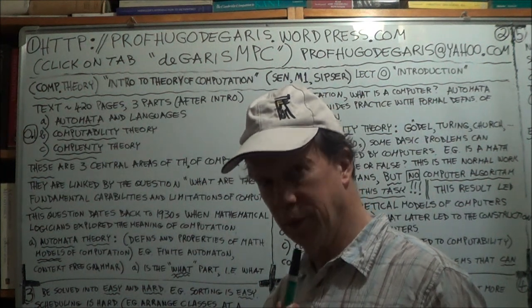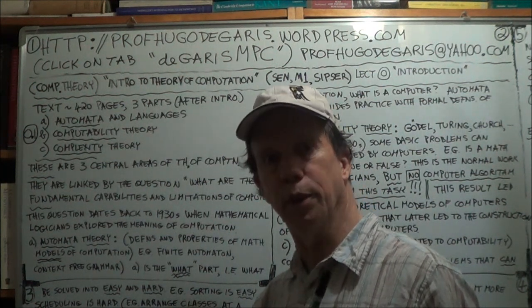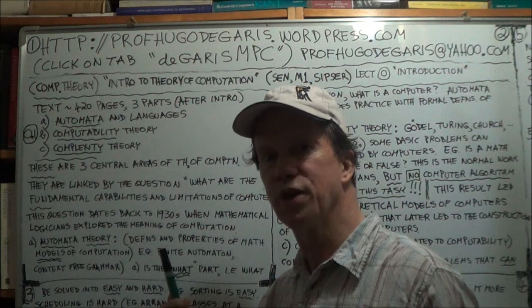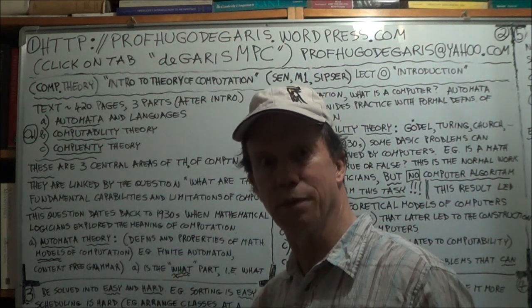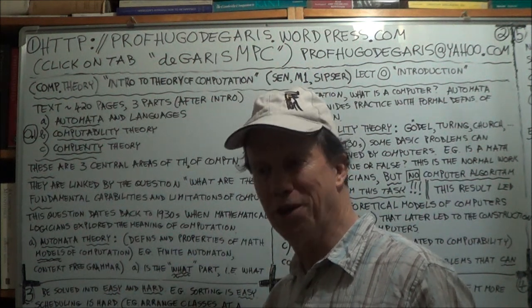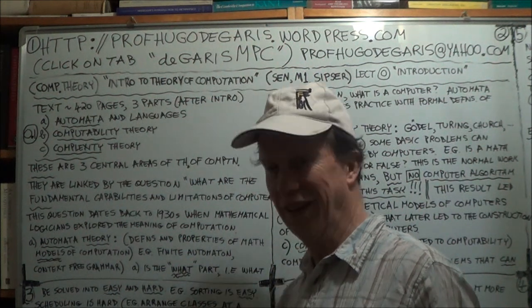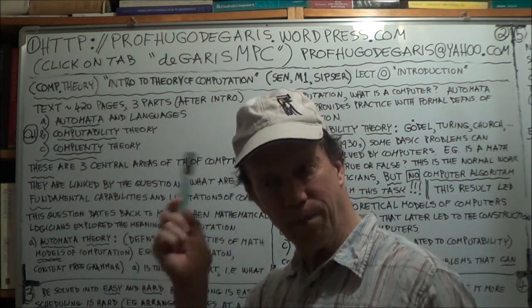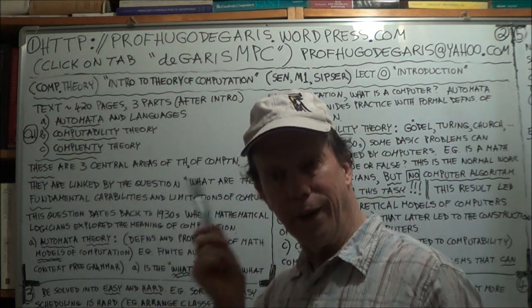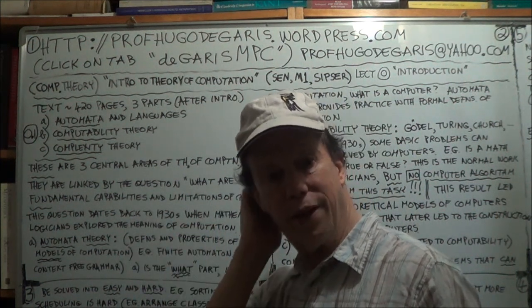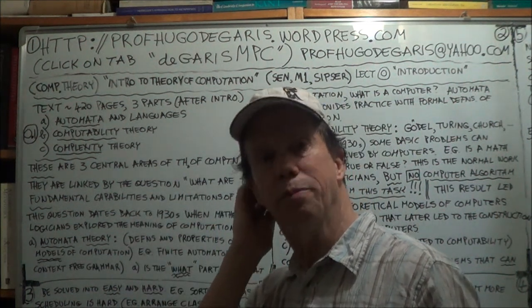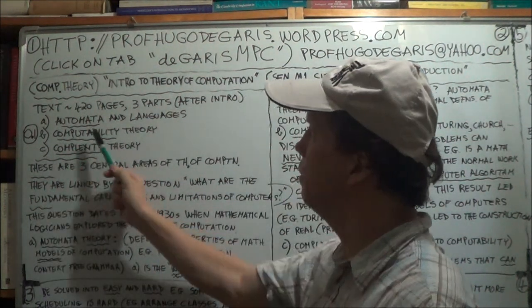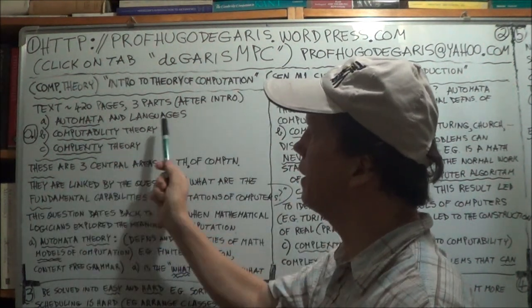The halting problem is unsolvable, cannot be computed — it's impossible. And you can prove that it's impossible, which is interesting. So take-home message: there are some things that cannot be computed. That's the topic of computability — is some task able to be computed?